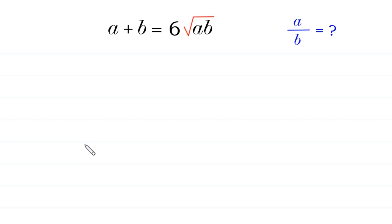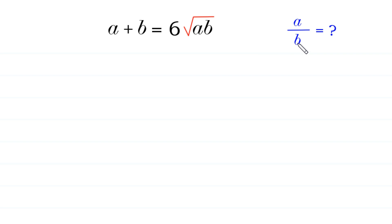Hello, welcome to how to solve this very nice equation. A plus B is equal to 6 times square root of AB, and we need to find the value of A over B.